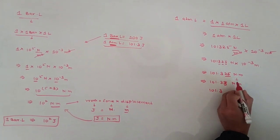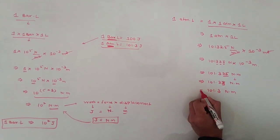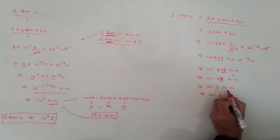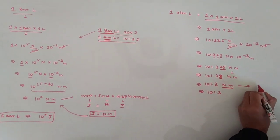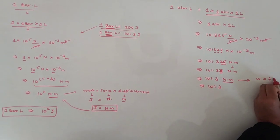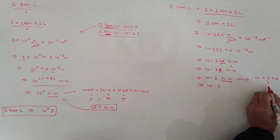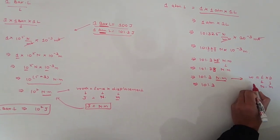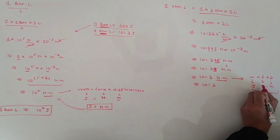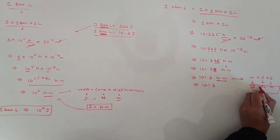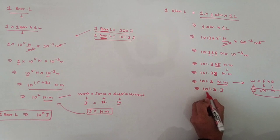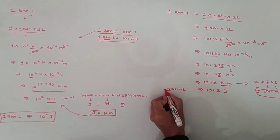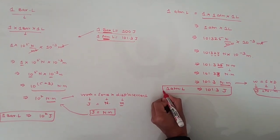The unit Newton·meter applies here as well. Using the same formula — work equals force into displacement — the unit of force is Newton and displacement is in meter, so joule equals Newton·meter. Substituting, we get 1 atmosphere·litre equals 101.3 joules.